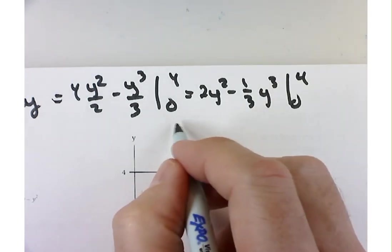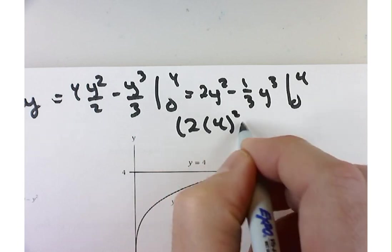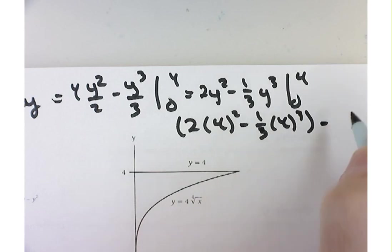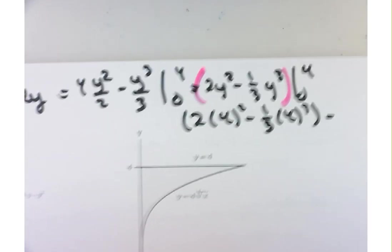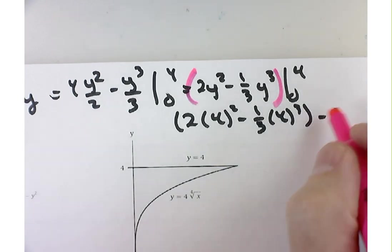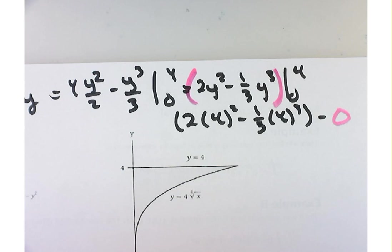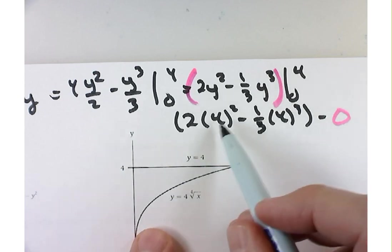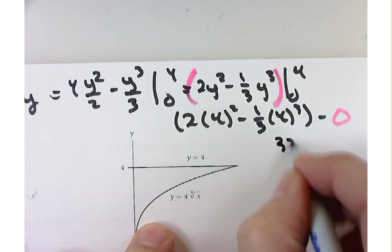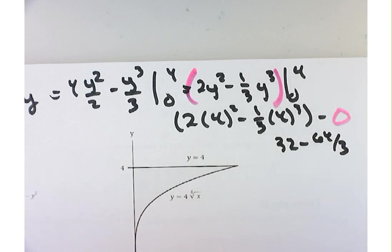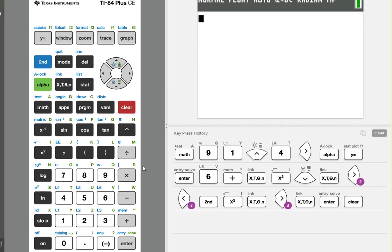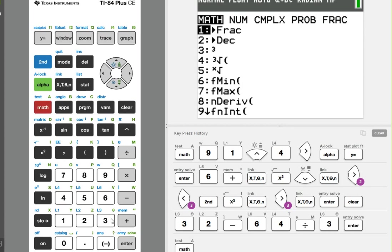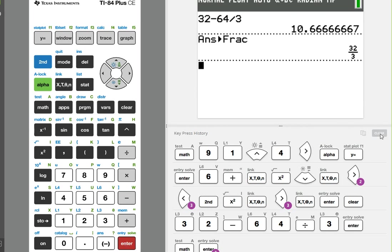Evaluated at the upper limit, that's going to be 2 times 4 squared minus 1 third times 4 cubed. What's going to happen when I put in a 0 in here? It's going to be 0. So I'll just put a minus 0, just to kind of show that I'm not ignoring that lower endpoint, but that also doesn't make a difference. So 2 times 16 is 32. So 32 minus 64 over 3.